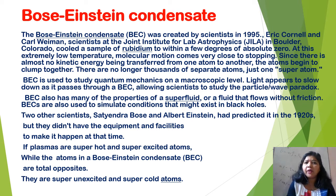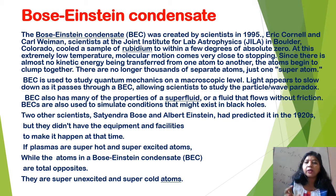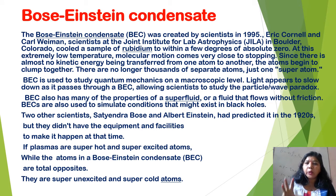They cornered the coldest sample of rubidium, cooling it within a few degrees of absolute zero. At this extremely low temperature, molecular motion comes very close to stopping. Since there is almost no kinetic energy and no energy is transferred from one atom to another, the atoms begin to clump together. They are no longer thousands of separate atoms — they become just one super atom.